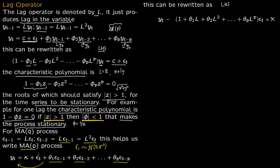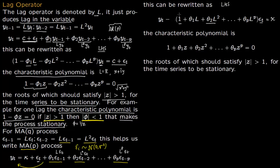After rearranging, you have y(t) minus θ₁·L·ε(t) minus θ₂·L²·ε(t) minus ... minus θₚ·Lᵖ·ε(t). For the characteristic polynomial of the MA process, focus on the lag polynomial part, replace L with z, and set 1 − θ₁z − θ₂z² − ... − θₚzᵖ = 0. The roots of this equation should satisfy |z| > 1 for the time series to be stationary.